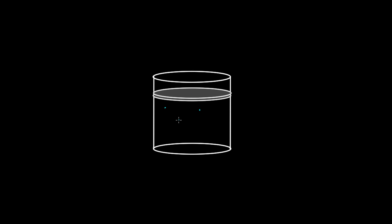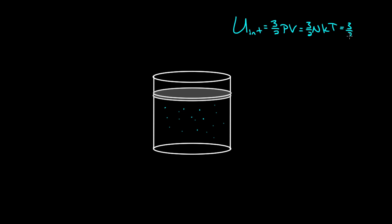Imagine you had a monatomic ideal gas in this cylinder, with a tightly fitted piston above it that prevented any gas from getting out. We know that the total internal energy for a monatomic ideal gas is just 3/2 p times v, or 3/2 n k T, or 3/2 little n R T. And the internal energy is really just the total kinetic energy of the monatomic ideal gas.